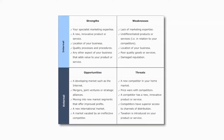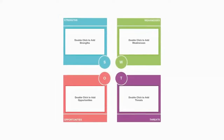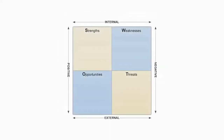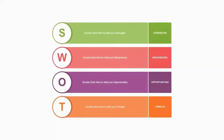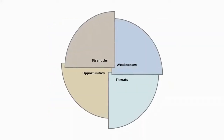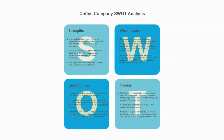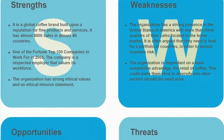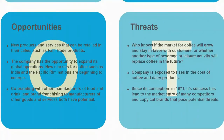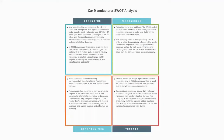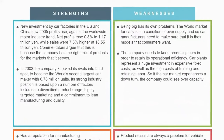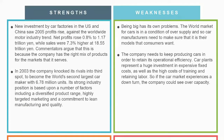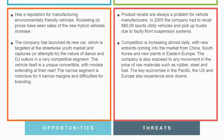A SWOT diagram analyzes a project or business venture by focusing on each of these factors. It typically consists of four boxes, one for each area, but the exact shape may vary depending on the design. SWOT diagrams can be especially useful when trying to decide whether or not to embark on a certain venture or strategy, by visualizing the pros and cons and clearly outlining all positives and negatives of a project. SWOT analysis makes it easier to decide how to move forward.